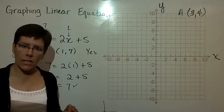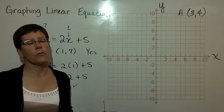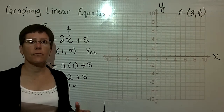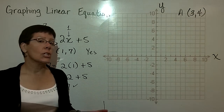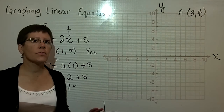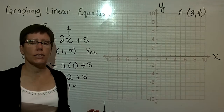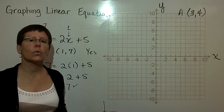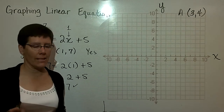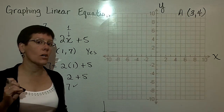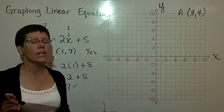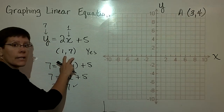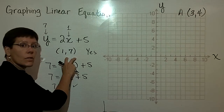There is an infinite number of ordered pairs that work, not just one. We're going to find three ordered pairs that work in any one equation and connect the dots on the rectangular coordinate system to see the straight line that results. Because they are called linear equations, it will be a straight line.